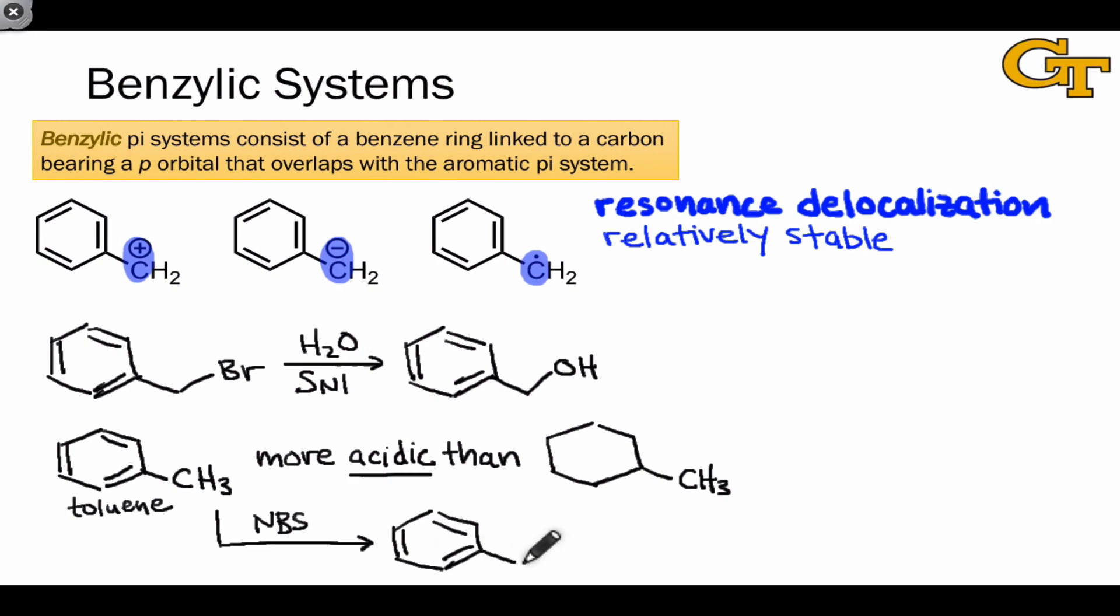So the treatment of toluene with NBS leads to bromination at the benzylic carbon, this carbon here. This involves the benzylic radical intermediate, which forms after abstraction of a hydrogen from the benzylic position.